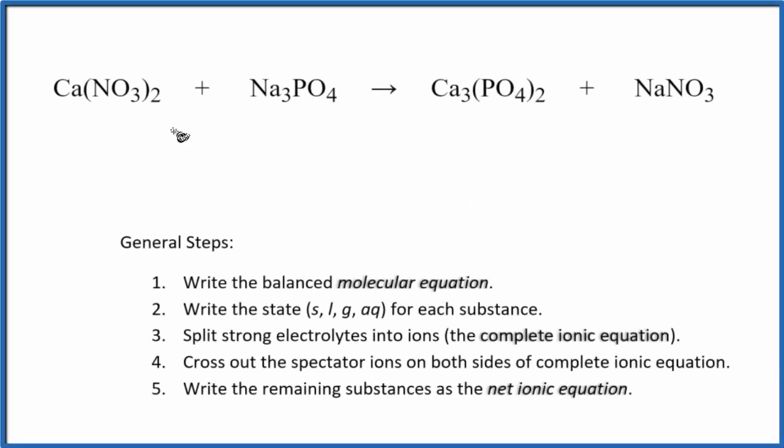In this video, we'll write the net ionic equation for Ca(NO3)2 plus Na3PO4. This is calcium nitrate plus sodium phosphate.